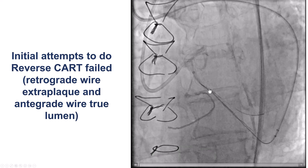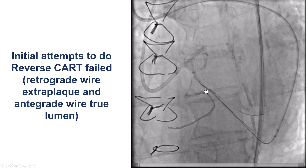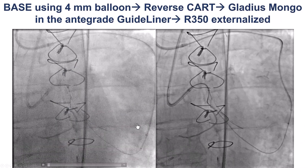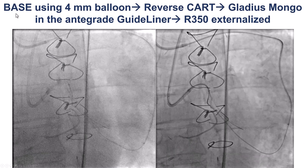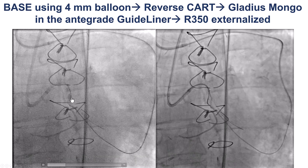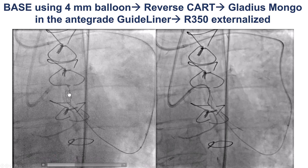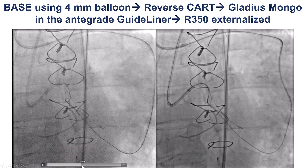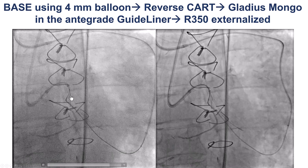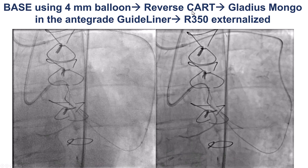We then attempted reverse CART. This was challenging because the antegrade wire was in the true lumen and the retrograde wire was extra-plaque. The solution was to go extra-plaque antegrade using the BASE technique with a 4.0mm balloon, allowing us to then do the reverse CART. The antegrade balloon was inflated, helping advance the retrograde guide wire, and we were able to inflate the balloon again and then advance the retrograde guide wire into the antegrade guide catheter and externalize the RG350.